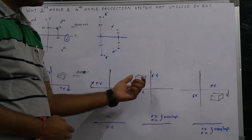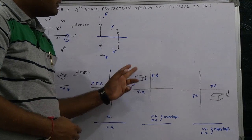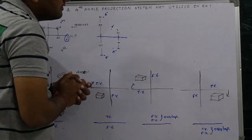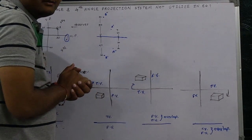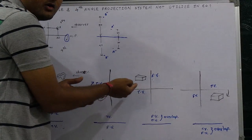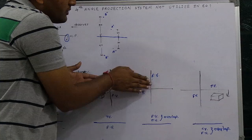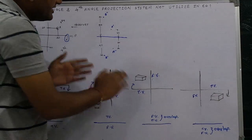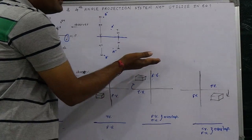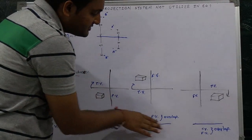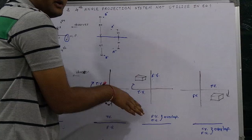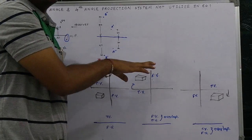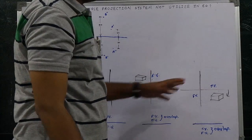Now for the second angle projection system — the product is placed in the second quadrant. The observer is looking from the same direction. The front view lies on the vertical plane and the top view lies on the horizontal plane. As per the rule of projection of a point, the horizontal plane must be rotated in the topward direction. As a result, both the top view and the front view end up on the topward side — they overlap each other, making it not feasible.